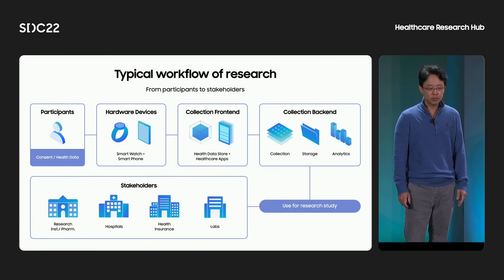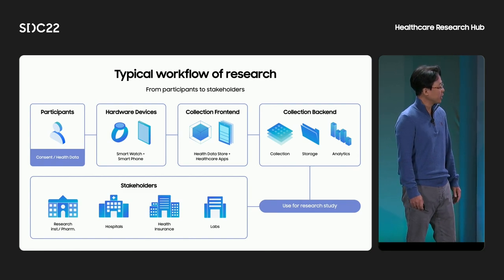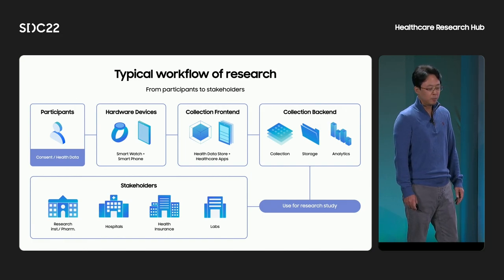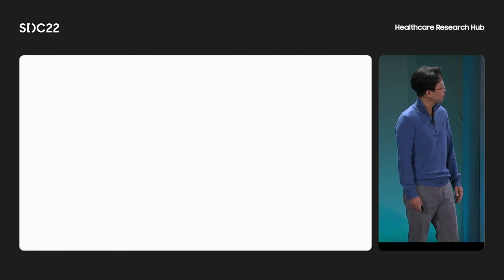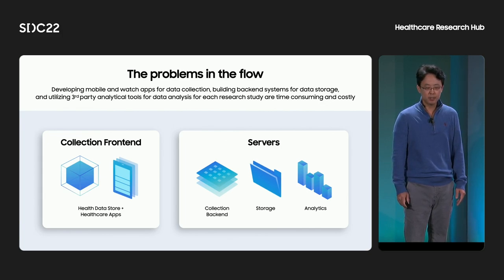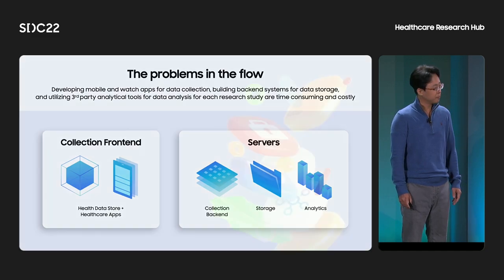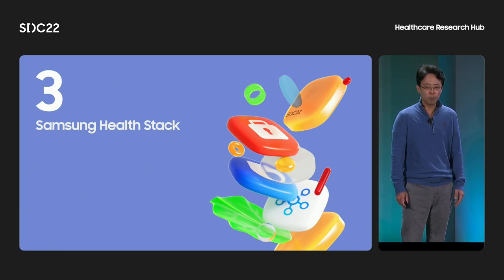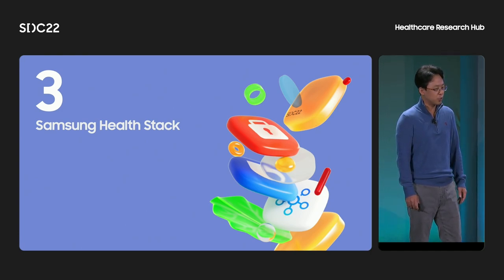The typical healthcare structure research flow starts with participants connected to health data strategy through applications or medical devices. After collection, the organization needs to store and analyze the data. They also need to create a back-end system for this collection process. The problem with this structure is that all the major costs involving parts of the research take huge time — time that can be spent on research or analysis itself. So, arriving at our solution, we will take a holistic approach. The collection, storage, and analytics will be covered in the same open-source solution: Samsung HealthStack.